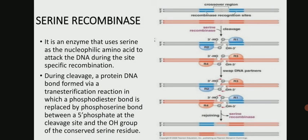Serine recombinase is an enzyme that uses serine as the nucleophilic amino acid to attack the DNA during site-specific recombination. During cleavage, a protein-DNA bond is formed via a trans-esterification reaction in which a phosphodiester bond is replaced by a phosphoserine bond between a 5' phosphate at the cleavage site and the OH group of the conserved serine residue.